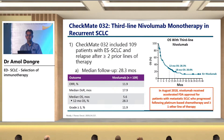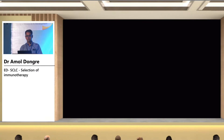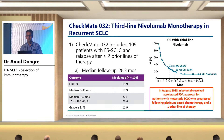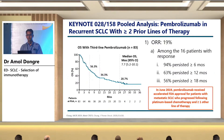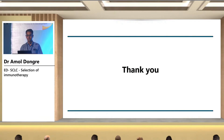CheckMate 032 evaluated third-line nivolumab monotherapy in recurrent SCLC. 109 patients were included, all relapsed after two prior lines of therapy, with a median follow-up of 28.3 months. The overall response rate was around 11.9%, whereas the median duration of response was around 17.9%. These represent the maintenance, first-line, and upfront data of immune checkpoint inhibitors.